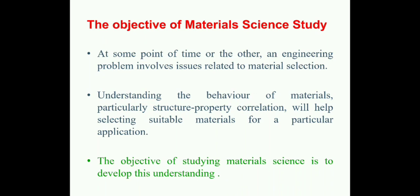At some point in an engineer's career, an engineering problem involves issues related to material selection — he will need to select a particular material for a particular application. Understanding the behavior of material, particularly the structure-property correlation, will help in selecting a suitable material for a particular application. That is the solution: you can choose by studying the structure-property correlation behavior of the material.